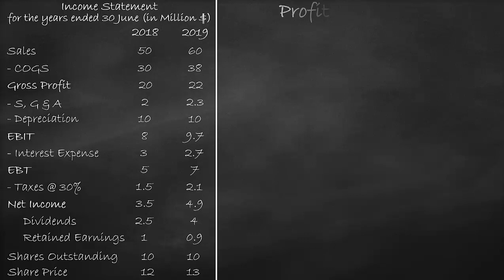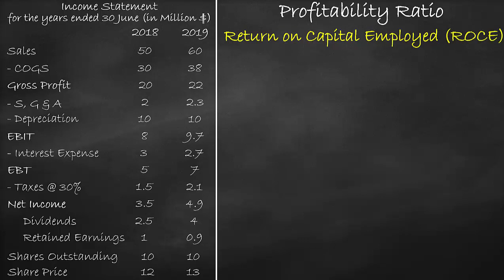Another example of a profitability ratio is the return on capital employed, or the ROCE. Return refers to a profit level, such as net income or EBIT. The return on capital employed formula is EBIT divided by assets minus current liabilities.